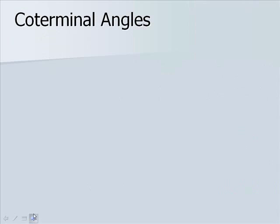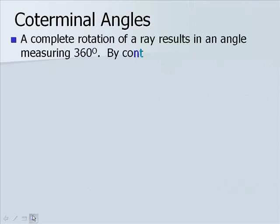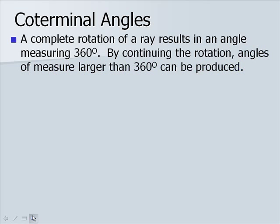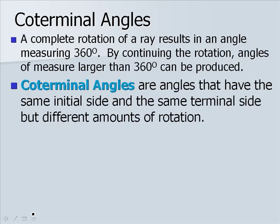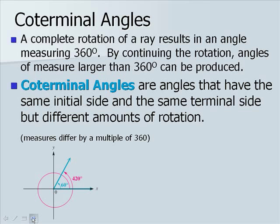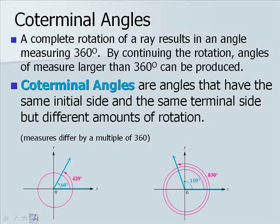Now let's look at coterminal angles. A complete rotation of a ray results in an angle measuring 360 degrees. By continuing the rotation, angles larger than 360 degrees can be produced — these are called coterminal angles. They have the same initial side and the same terminal side, but different amounts of rotation, and their measures differ by a multiple of 360. For example, 60 degrees and 420 degrees are coterminal: same initial and terminal sides, but different measures of rotation.